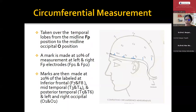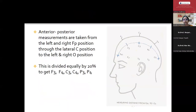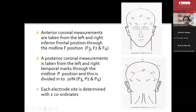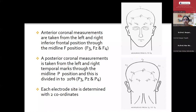Like this we mark all positions and place the electrodes. In addition, you have the anterior-posterior measurements taken from Fp1 to get F3, C3, P3, O1 — all at 20%. Similarly on the opposite side: Fp2, F4, C4, P4, and O2. Finally there is an anterior coronal measurement and a posterior coronal measurement, both at 20%, giving electrodes F4, F8, F3, F7 anteriorly, and P3, T5, P4, T6 posteriorly.